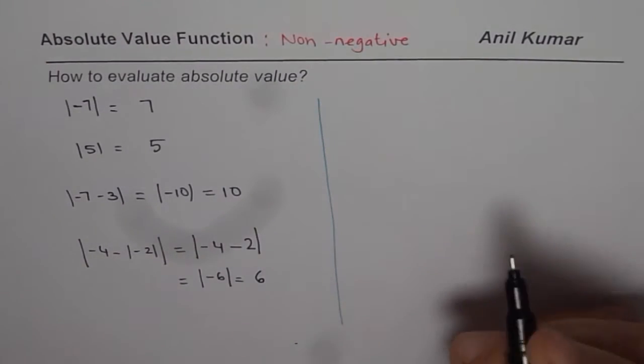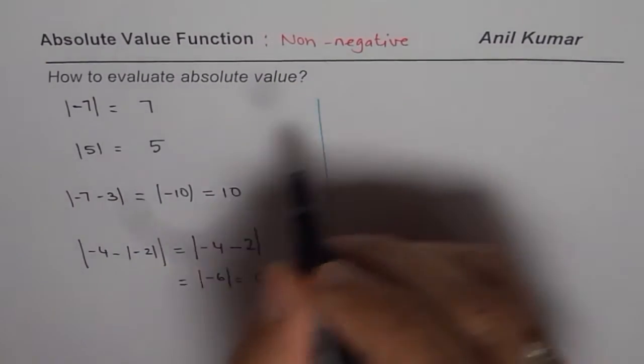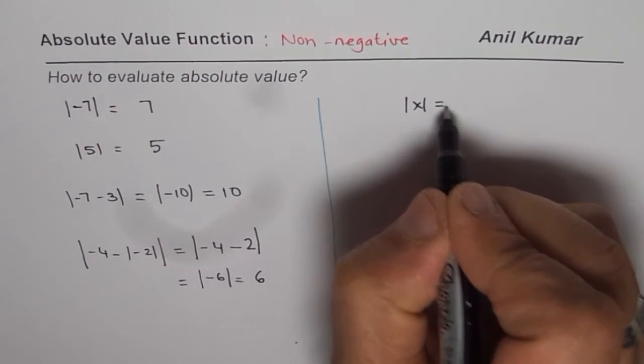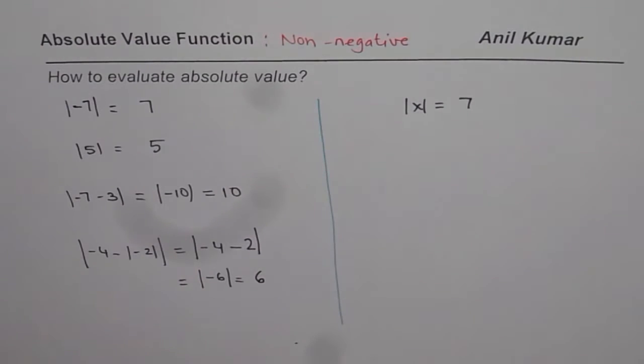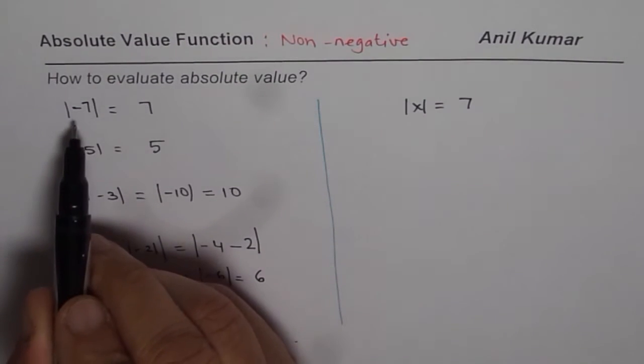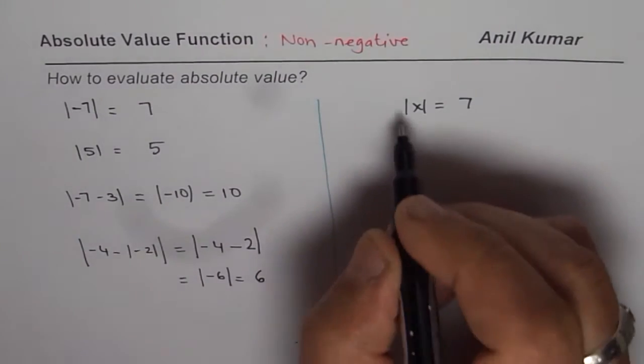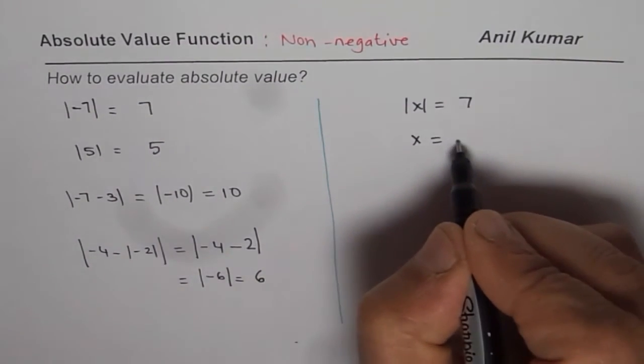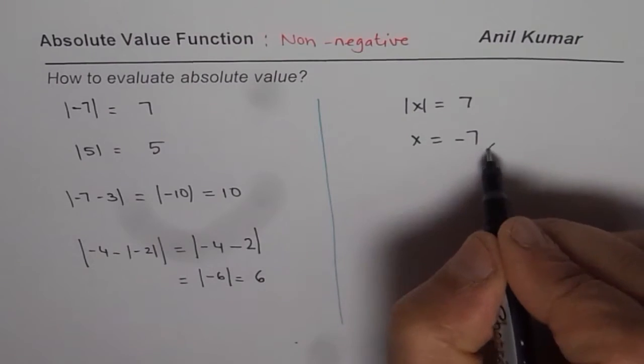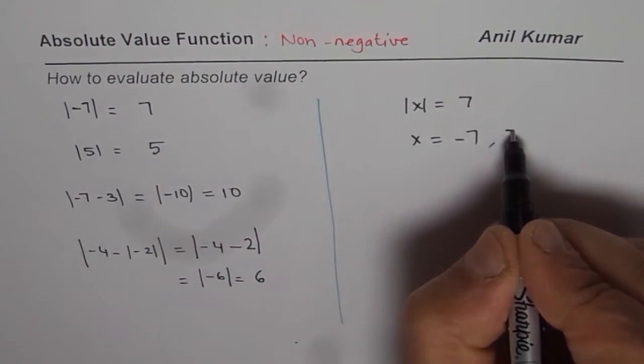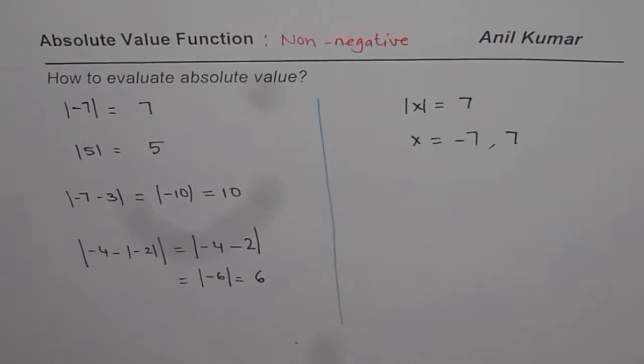Now let me extend this to general terms. When I say from here that absolute value of x equals 7, what does that mean? Well you have seen that absolute value of -7 is 7, so that means x could be -7 also. And of course absolute value of 7 is 7, so that means x could be +7 also. That is how you have to visualize the absolute function.